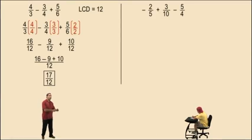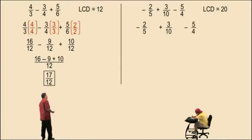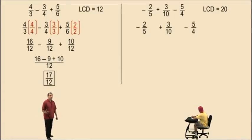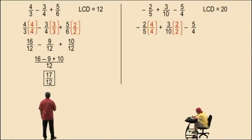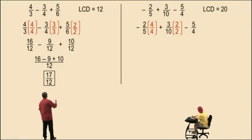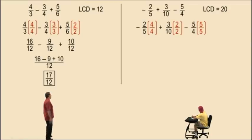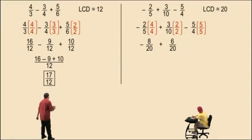If 20 did not work, then try 30. But since 20 works, that's our lowest common denominator, so each fraction can be changed to have a denominator of 20. For negative 2 fifths, we multiply by 4 over 4, because 5 times 4 is 20. For 3 tenths, we multiply by 2 over 2, because 10 times 2 is 20. And the 5 fourths, we multiply by 5 over 5, because 4 times 5 is 20. So we get negative 8 twentieths plus 6 twentieths subtract 25 twentieths.